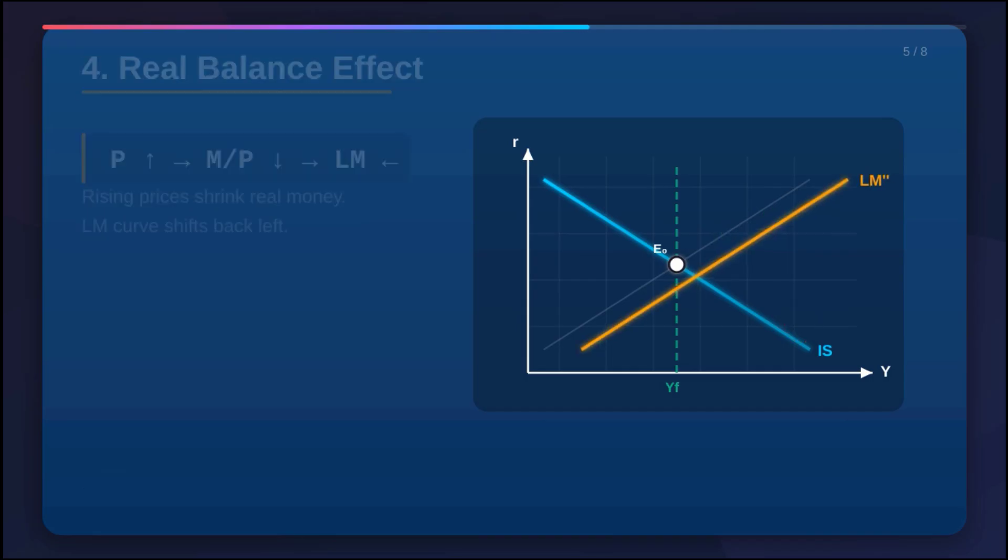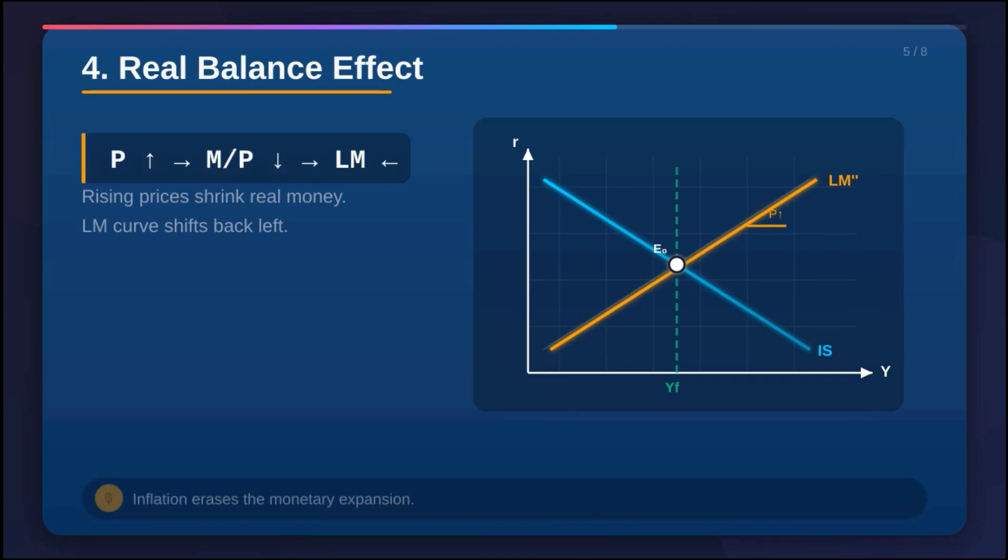The purchasing power of that money. We're talking about real money balances, M over P, the money supply relative to the price level. And since prices are rising just as fast as the new money is being pumped in, the actual value, the real purchasing power of the economy, hasn't changed at all. The increase in the M is just canceled out by the increase in the P.